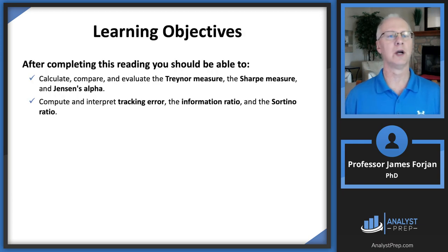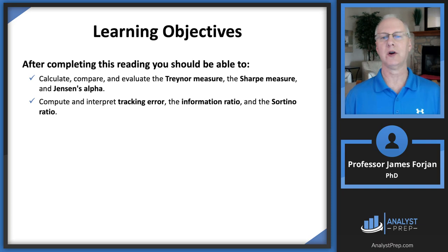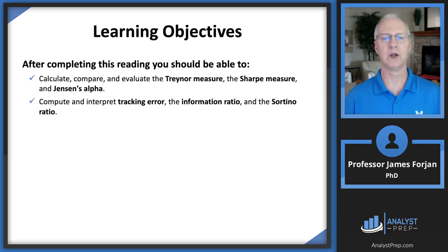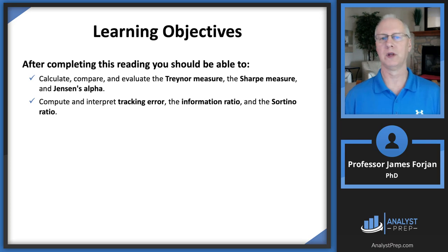Let's look at the learning objectives. We're going to examine the Treynor and Sharpe measures, Jensen's Alpha, tracking error, information ratio, and the Sortino ratio. Notice the learning objectives have the word calculate or compute in them, so we're going to have to get out our calculators and the side of our brain that can do math.